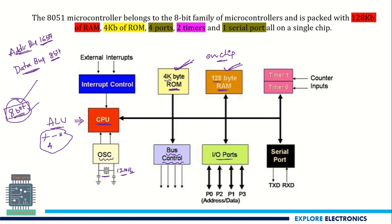There are four I/O ports: P0, P1, P2, and P3. Each port has 8 pins, giving a total of 32 I/O pins that can be used as input and output. Out of these four ports, the first two can be used for address or data communication — 8 plus 8 gives 16-bit for addressing, or 8-bit for data.